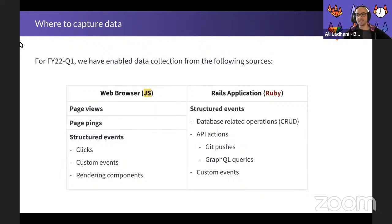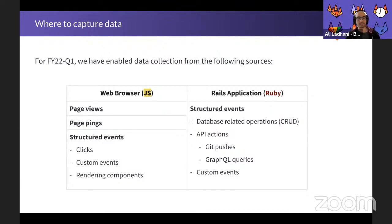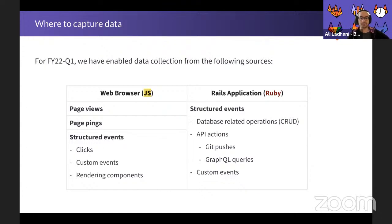We collect Snowplow events from two different sources. There's the web browser, where we automatically have page views and page pings. In terms of structured events you can add, some examples would be clicks, rendering components, and any other custom events. On the back end, we have structured events — for example, you could add stuff related to database operations, API actions, or any other custom events that are needed.